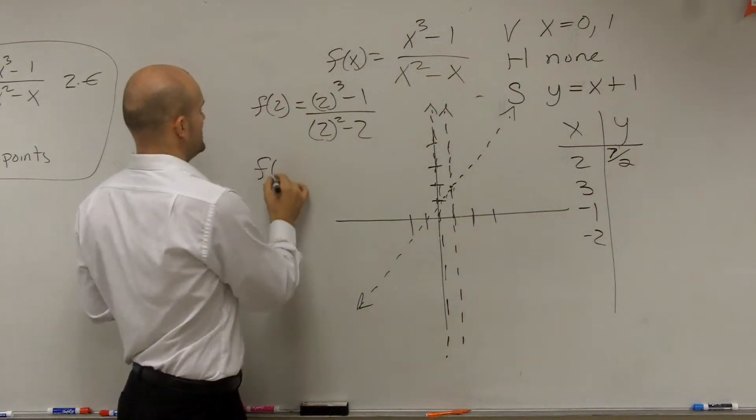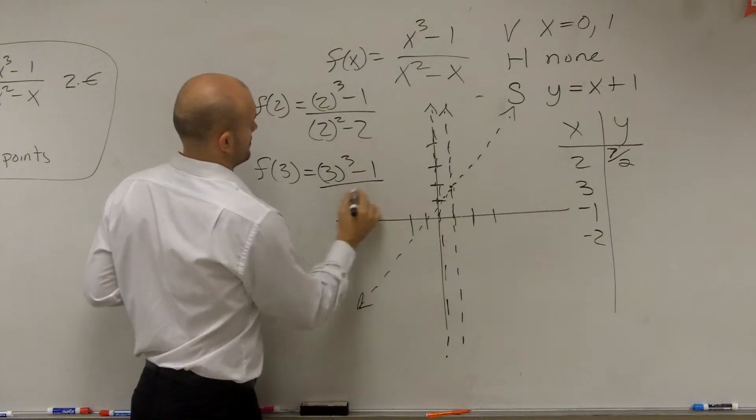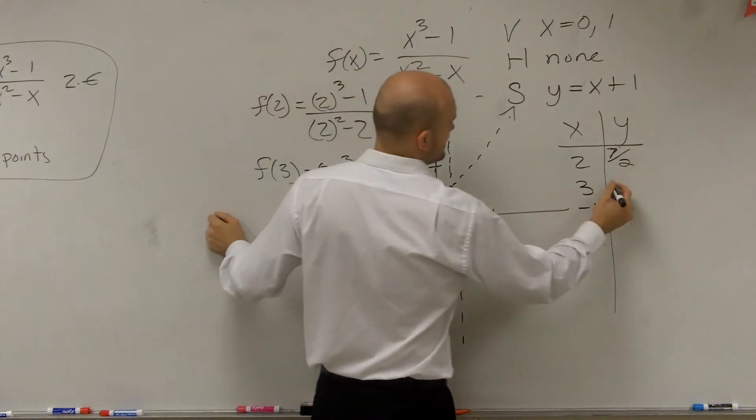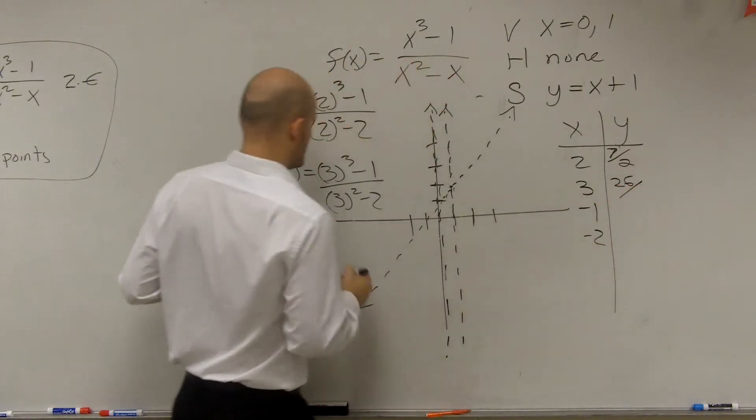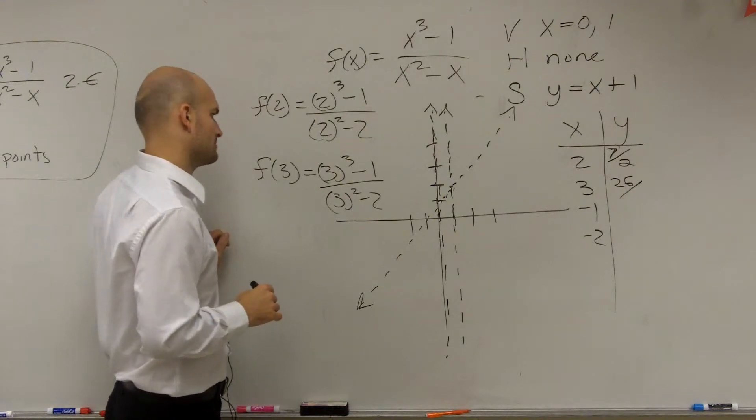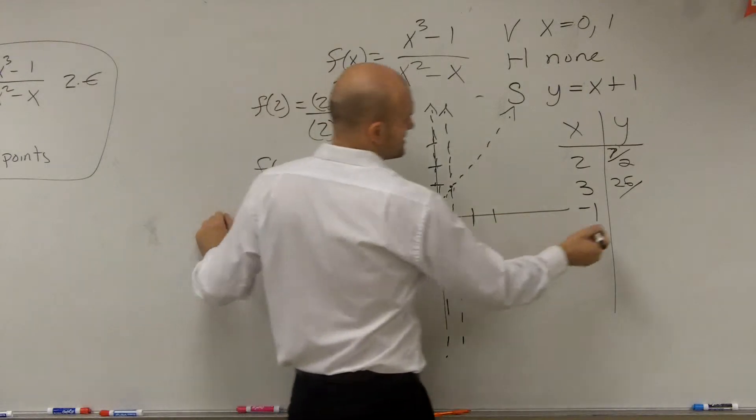Number 3, f of 3, 3 cubed is 27 minus 1 is 26. Divided by 9 minus 2 is going to be, oh, that's 3, right? It is 9 minus 3, which would be 6.